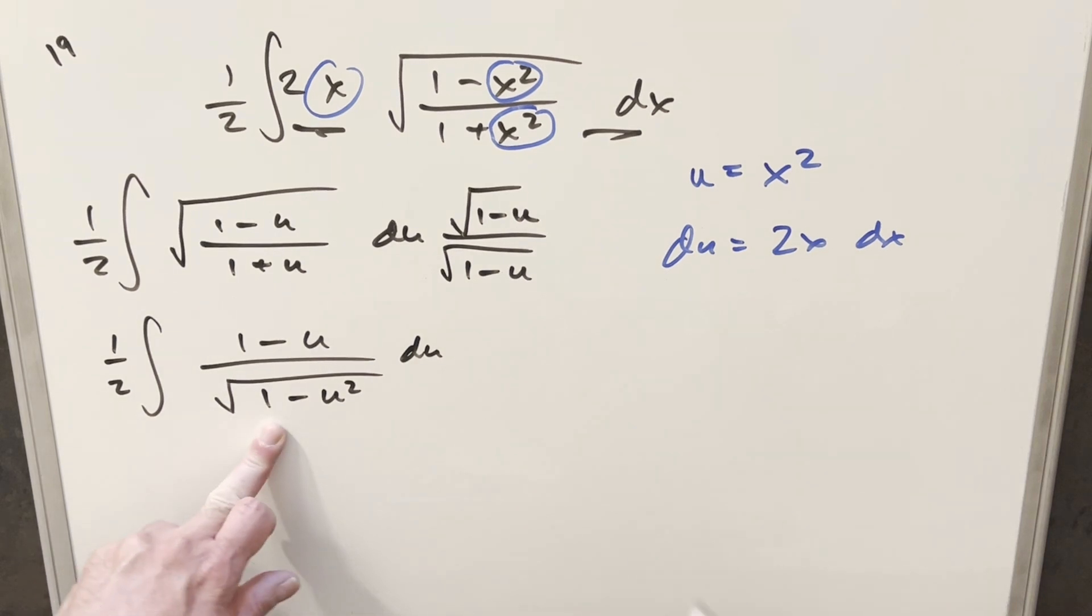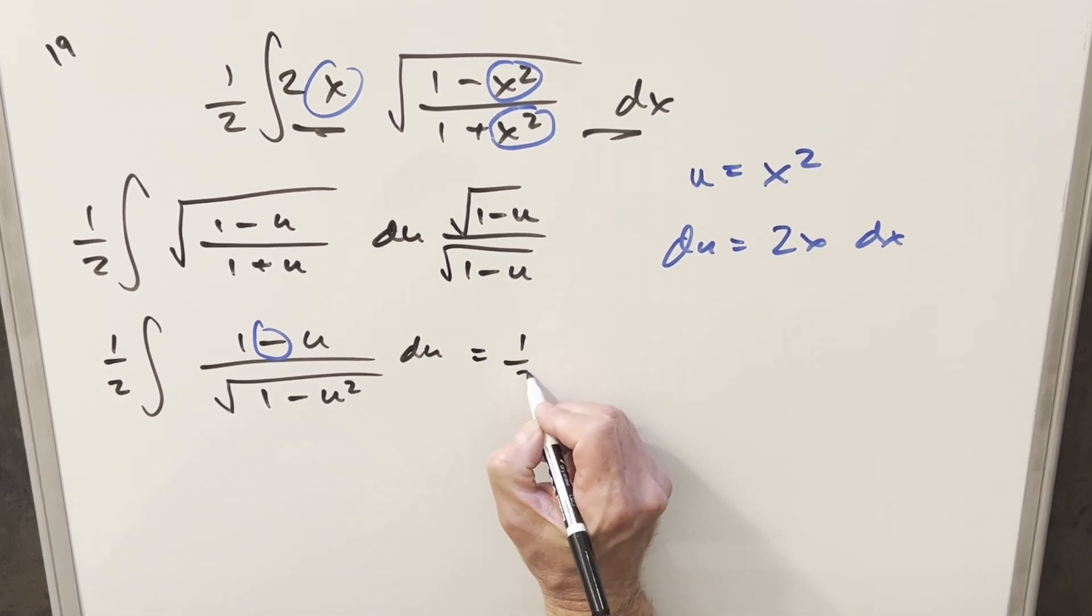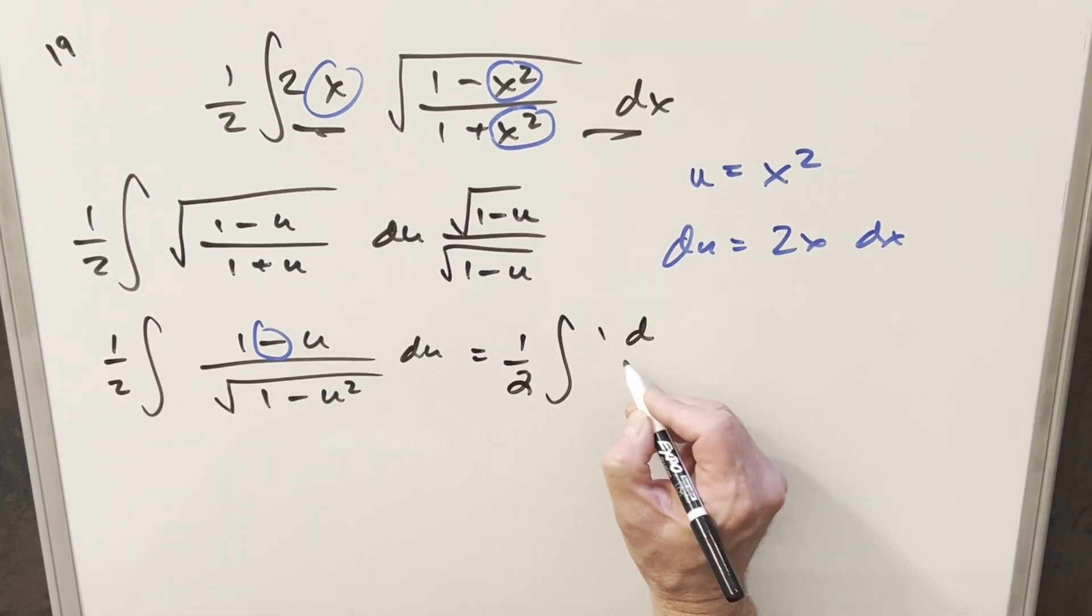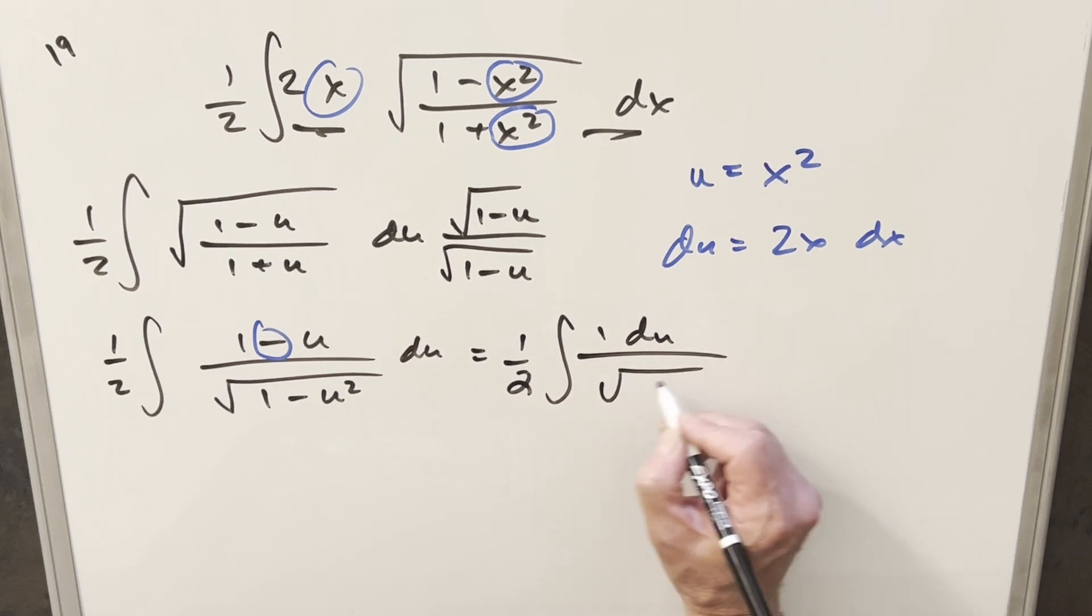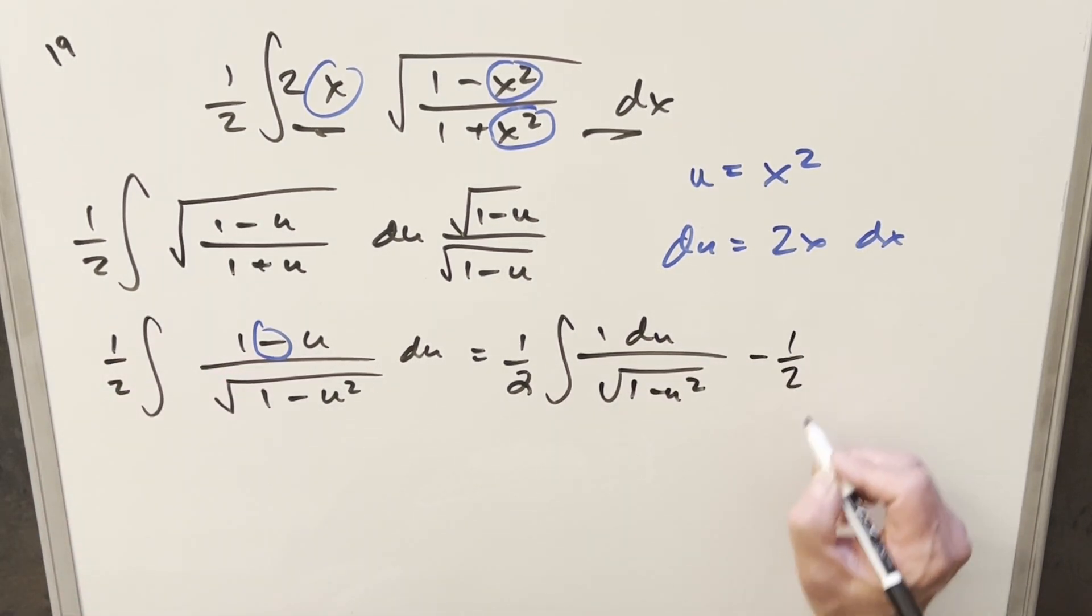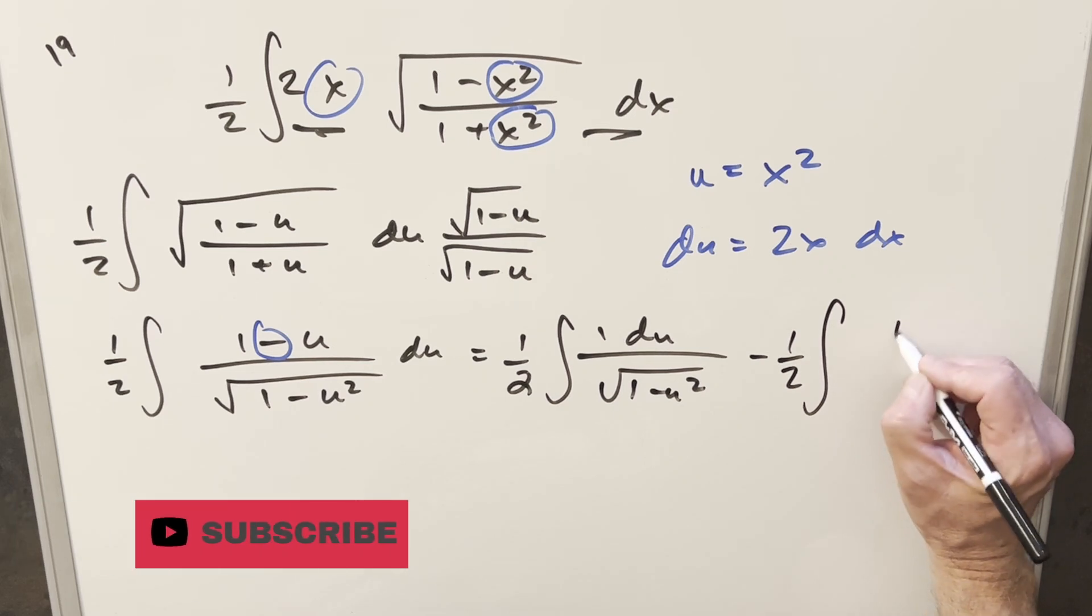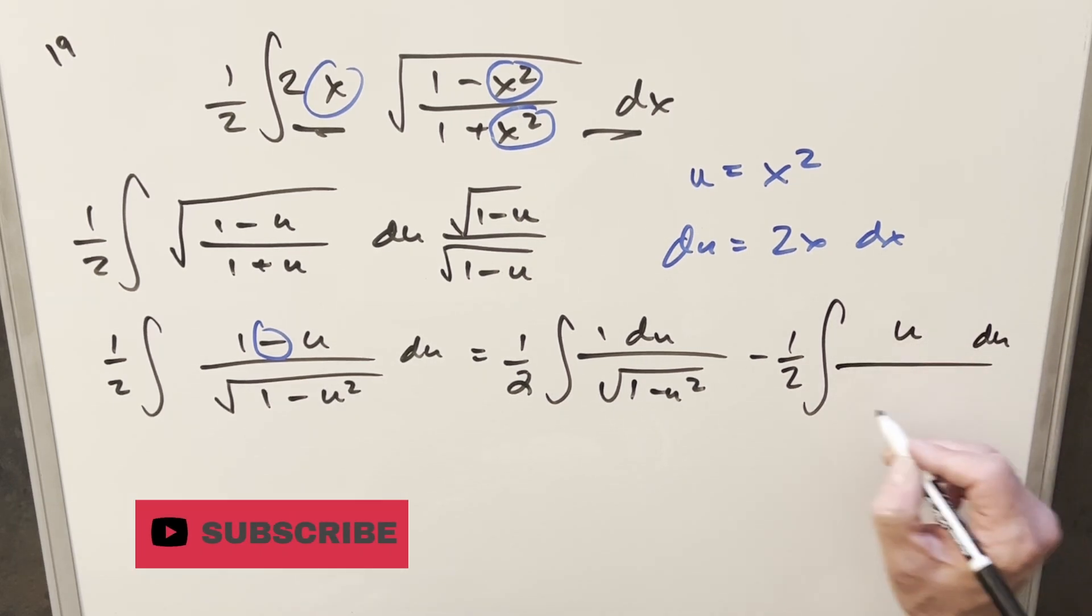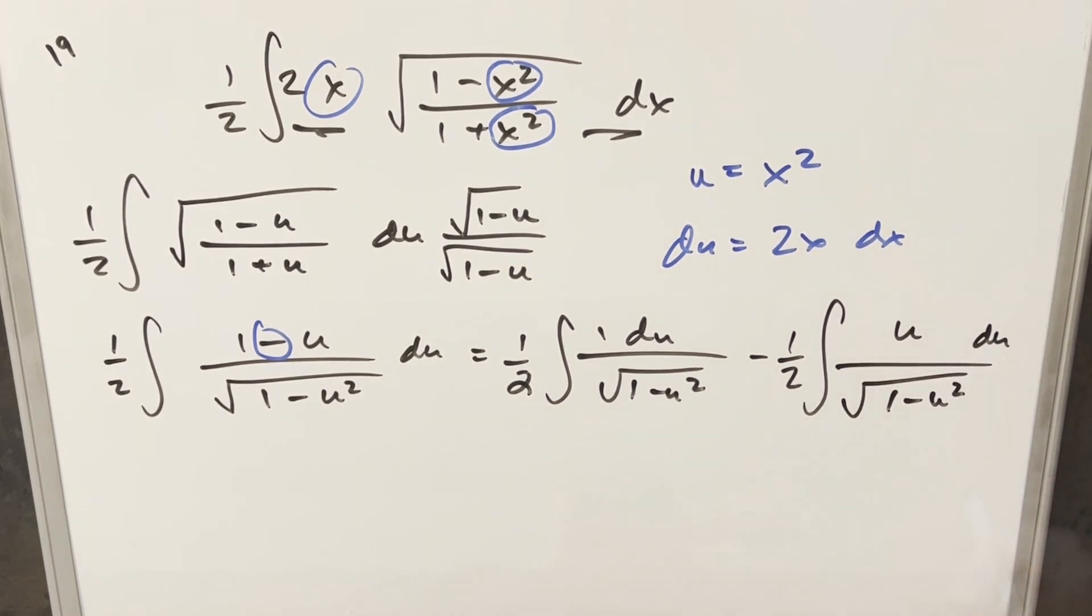But then from here, what I can do using this minus sign right here, what I can do is break this up into two integrals. So for the first one, we're going to have 1 half times 1 du over square root of 1 minus u squared. Second one, using the minus sign, we'll have minus 1 half integral of just u du over square root of 1 minus u squared.